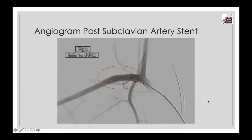Finally, a covered stent was deployed to exclude the pseudoaneurysm and was placed successfully without any further sequelae. The angiogram shows the position of the stent, confirming it has successfully excluded the pseudoaneurysm and that patency of the vertebral and subclavian arteries has been achieved. The patient made a very good recovery, subsequent chest x-ray changes showed that the initial issues had resolved, he had no neurological sequelae, and he remains in remission from his AML.